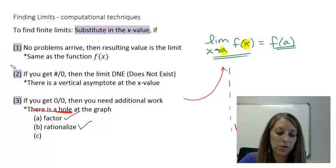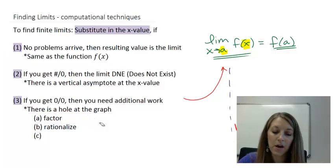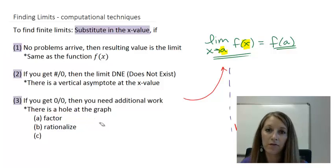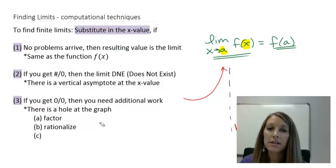Here I have the limit as x is approaching 1 of x squared minus 1 over x squared minus 3x plus 2. I suggest you pause the video and see if you can come up with the answer to this one on your own. The first thing that you do is you substitute in your x value. If no problems, you have your answer. If you get something over 0, it does not exist. And if you get 0 over 0, that creates a hole in the graph.